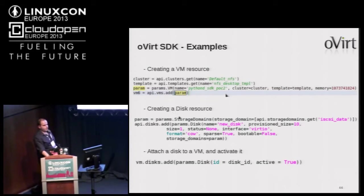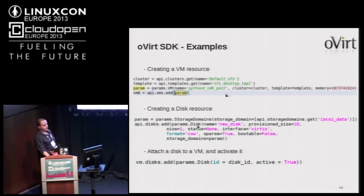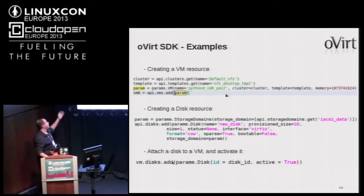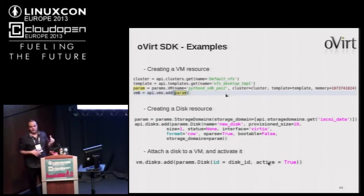To create a new disk, specify the storage domain, then call api.disks.add to create a new disk entity with parameters for name, size, status, interface, format, etc. Once created, you can attach it to the VM using vm.disk.add, passing the disk ID and specifying whether to activate it now. oVirt supports hot-plugging of disks.